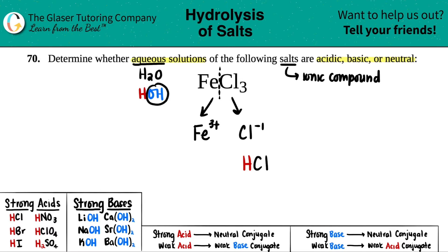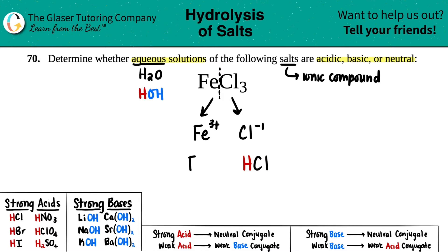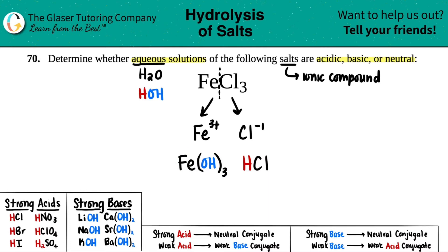The negative hydroxide is going to want to go with the positive iron — OH always goes with the positive, H always goes with the negative. This would technically be Fe(OH)₃, though you could get away with writing FeOH. The charge isn't critical to get the correct answer here.